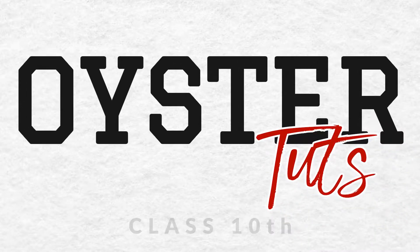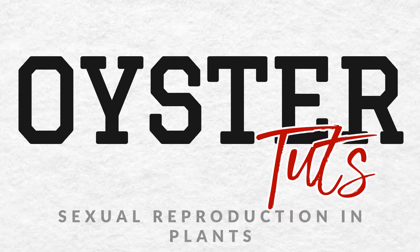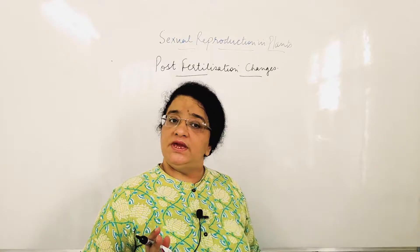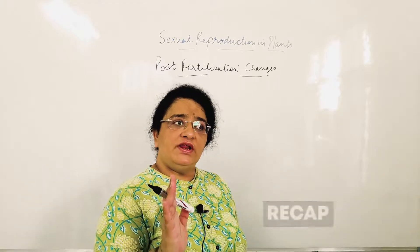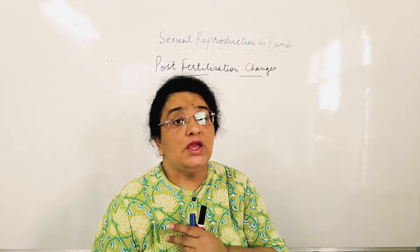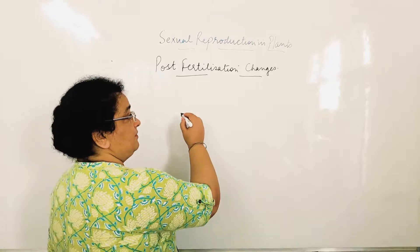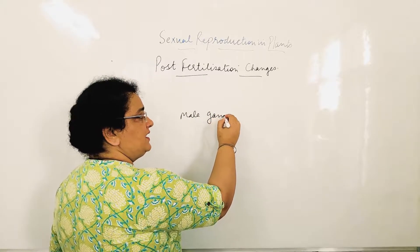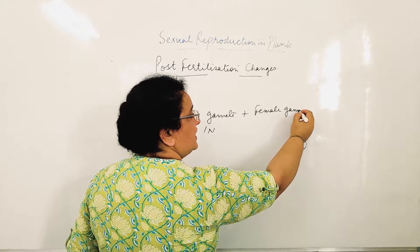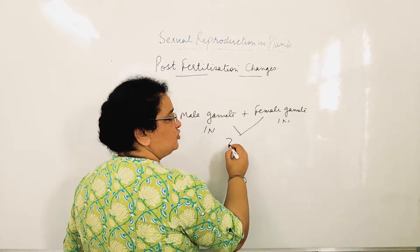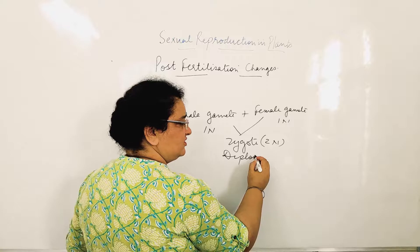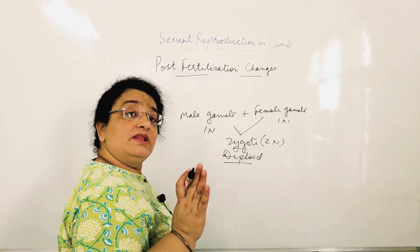Hi everyone, we have reached the next part of sexual reproduction in plants, that is post-fertilization changes. Fertilization in plants: after fertilization occurs, the result is a zygote. One male gamete fuses with the female gamete — that is, one haploid structure fuses with another — giving rise to one diploid structure called the zygote.